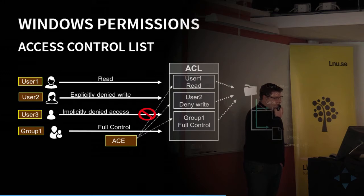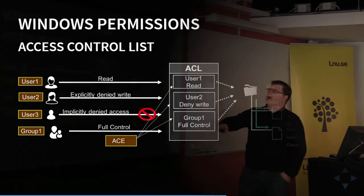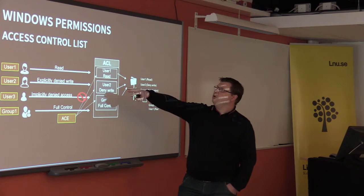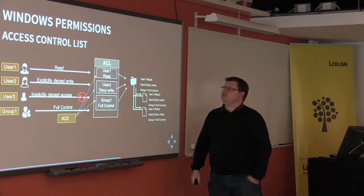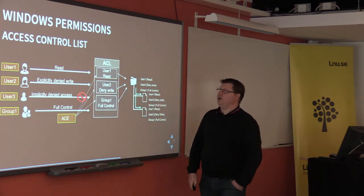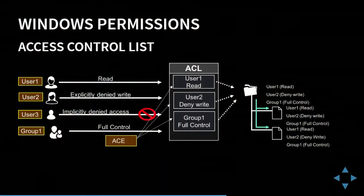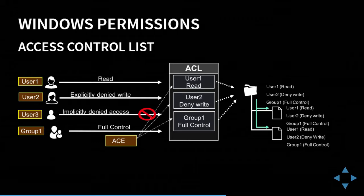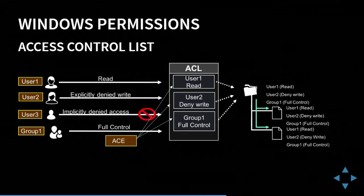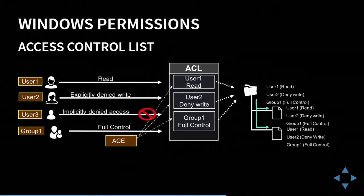Here's an example of an ACL: we have one user with read permission set, deny write for user 2, and user 3 is not in the list so it's implicitly denied access. Then we have a group with full control. The difference between full control and read-and-write is that full control also allows changing the permissions — so you should be really careful about granting full control to anyone who is not an administrator.